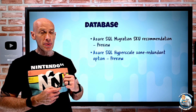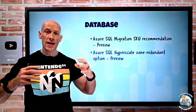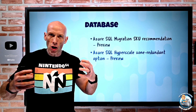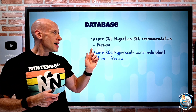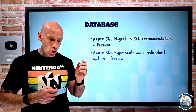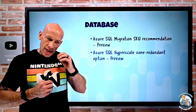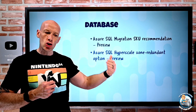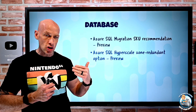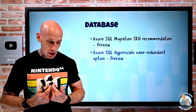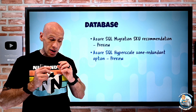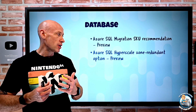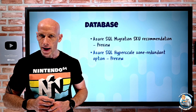Azure SQL Hyperscale — remember that's the massively scalable version of SQL with multiple page servers for large data and huge performance — now has a zone redundant option. So my database will now get replicated over multiple availability zones within the particular region. I must specify this at creation time, it's only for the Gen 5 compute SKUs, and it's only in certain regions because it is in preview right now.